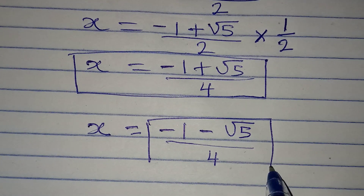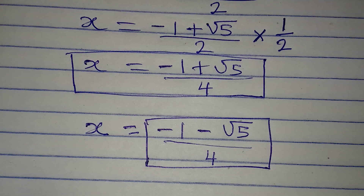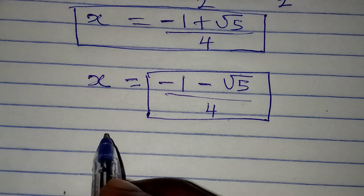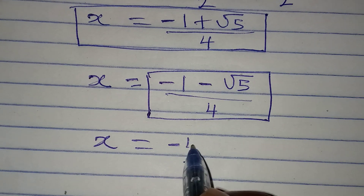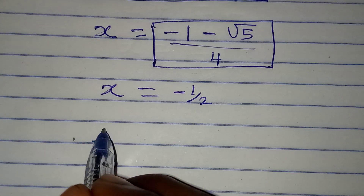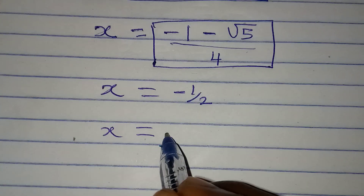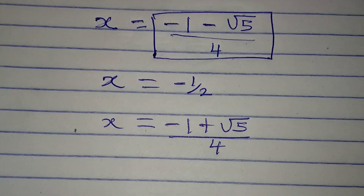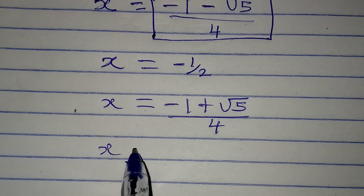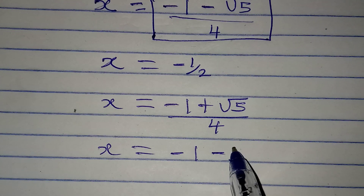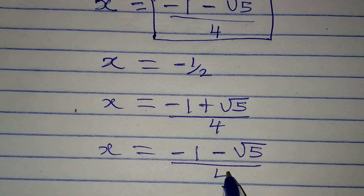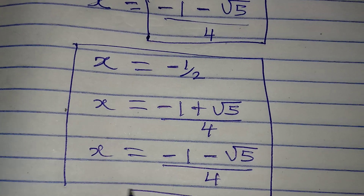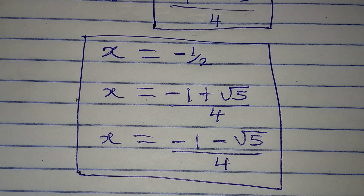Let's bring out all three values. We have x equal to negative 1 over 2. We also have x equal to minus 1 plus square root of 5 over 4. And we also have x equal to minus 1 minus square root of 5 over 4. These are the three values of x that will satisfy the given equation. Thank you for watching.